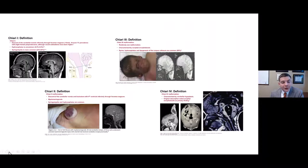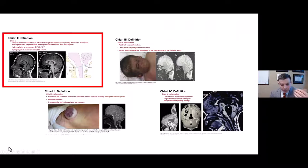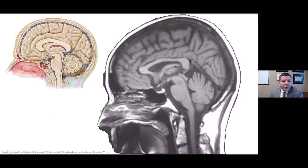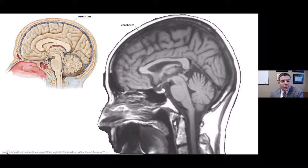The focus of my talk is less about these dysraphic conditions and more about Chiari I malformation, where a lot of research interest and mystery exists. Looking at a midsagittal MRI view, what are some things we've examined in the past? There are features on the mid-sagittal view that have been an important focus of research attention.